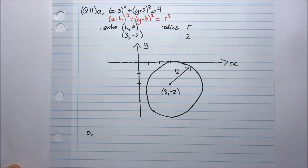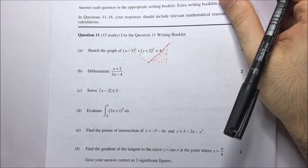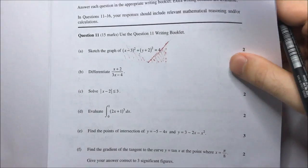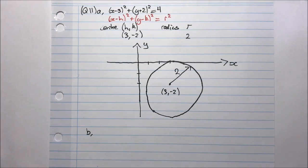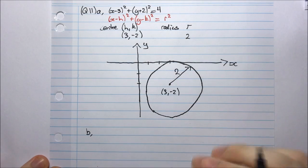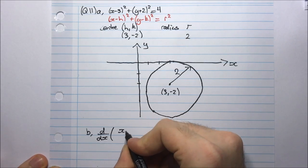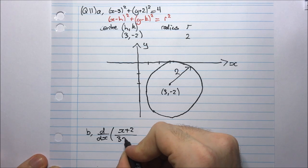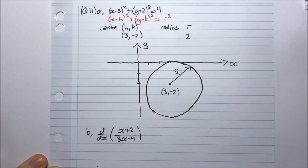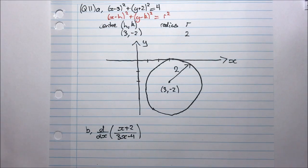Part B says to differentiate (x + 2)/(3x - 4). I'm differentiating (x + 2)/(3x - 4). Now I need to recognize that this is a quotient so I'm going to be using the quotient rule for differentiation.